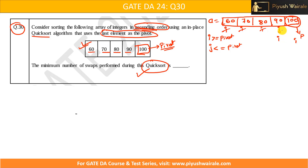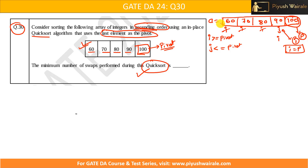Now checking j: 90 is less than 100, so j does not move left. We have already crossed i and j. In quicksort, when i and j cross, we swap i with the pivot. But here, i is already equal to the pivot position — they are the same element — so no swap is required. Since the array is already sorted, the minimum number of swaps performed is zero.